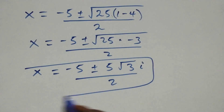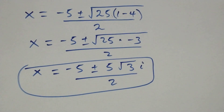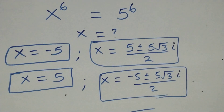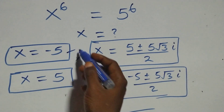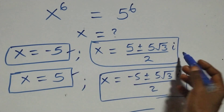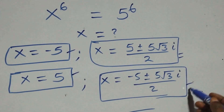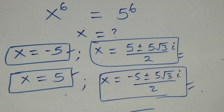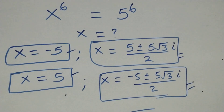We also have two complex solutions here. Therefore, all together in this problem we have six solutions: two real solutions, two complex solutions, and two complex solutions. Thank you for watching, don't forget to subscribe for more videos, turn the notification bell on, share this video, give it a thumbs up, and put a comment. See you in the next class, bye for now.